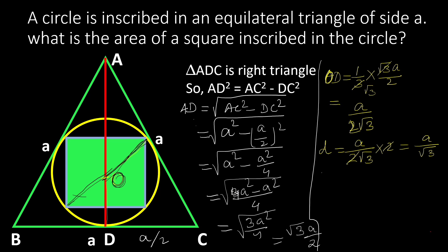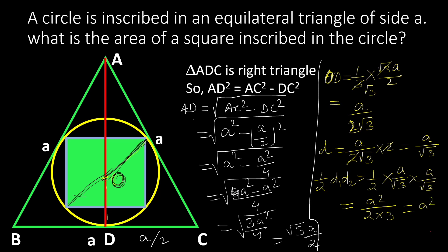The area of the square equals half × D1 × D2. Since both diagonals are equal in a square, it is half × (A/√3) × (A/√3), which equals A²/(2 × 3) = A²/6. So the area of the square inscribed in a circle, which is inscribed in an equilateral triangle of side A, is A²/6.